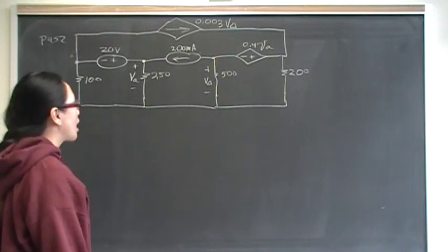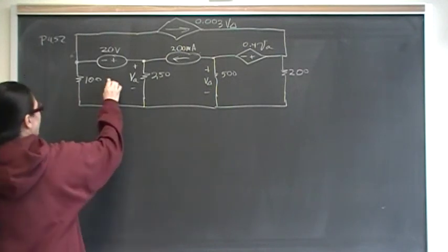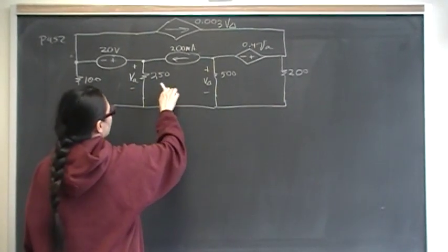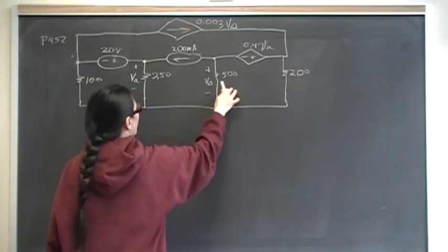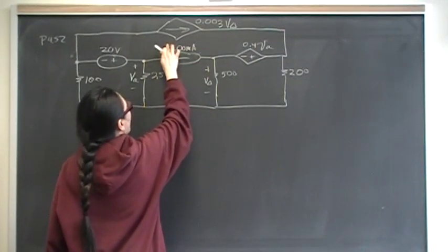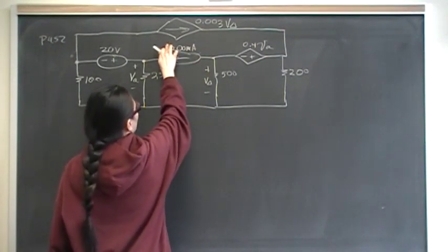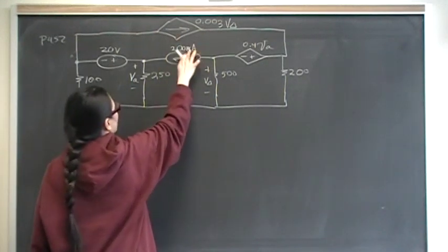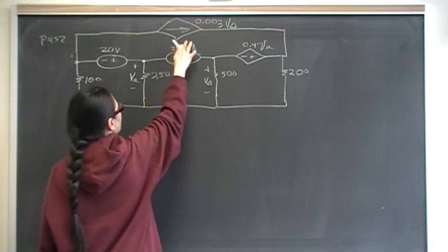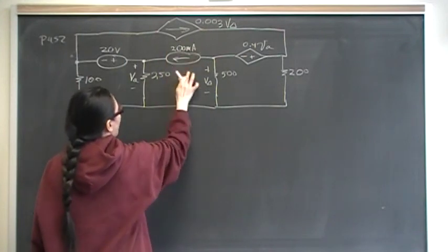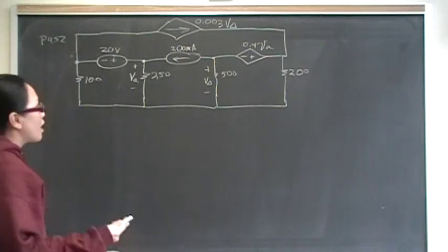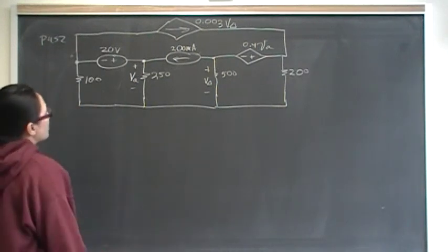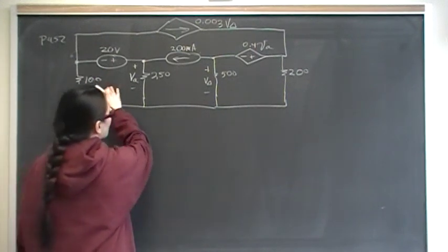So I began to set up my mesh equations. I said, okay, this is going to be Ia, this is going to be Ib, and this is going to be Ic. And this here is going to be 0.003 V delta — that will be that current. So 0.003 V delta plus Ib has to equal 200 milliamps. I was like, okay great, I have enough equations and enough unknowns.